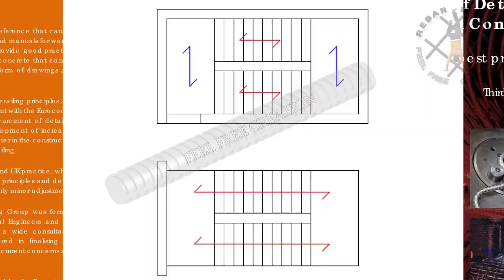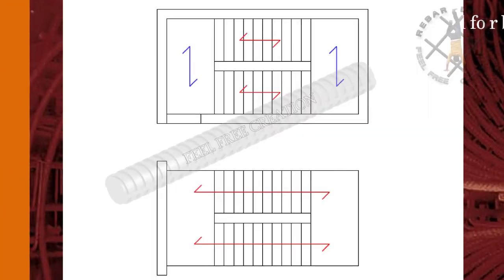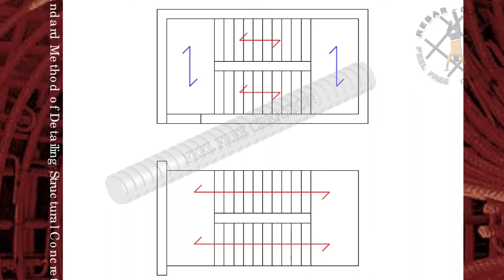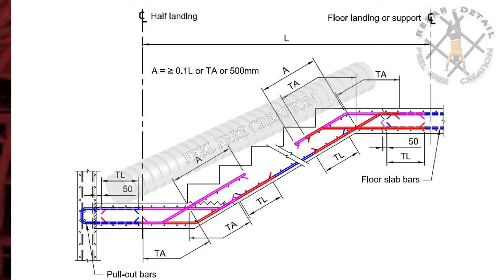Staircase bar arrangement: if staircase supported with landings, like simply supported, the arrangement can be suggested as shown here, where L is span length, TA is tension anchorage, and TL is tension lap.